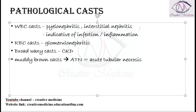Then we have RBC casts, which are seen in glomerulonephritis. We also have broad waxy casts, which are important in chronic kidney disease. Finally, muddy brown casts are seen in acute tubular necrosis.